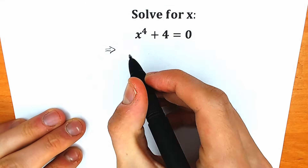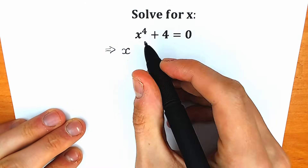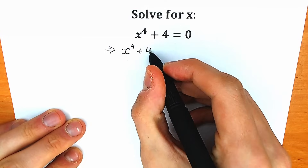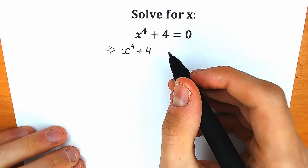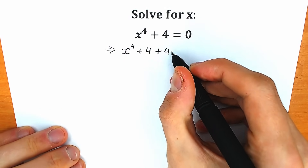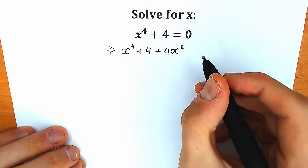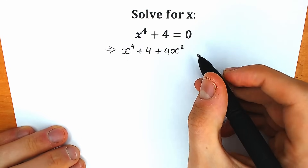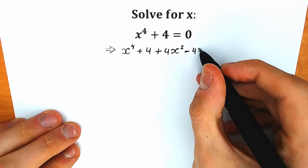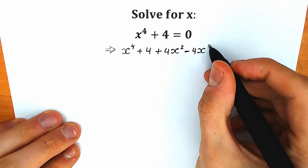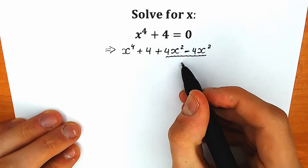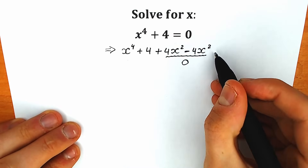What do I mean? We have the same expression — x to the fourth power plus 4. I'm going to add plus 4x squared to this, and then we need to subtract it, so we have minus 4x squared. This addition and subtraction is equal to zero, so it changes nothing for us.